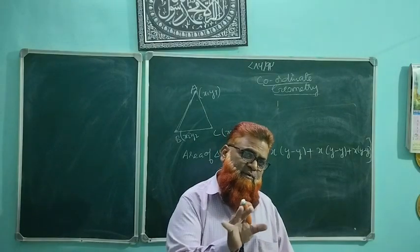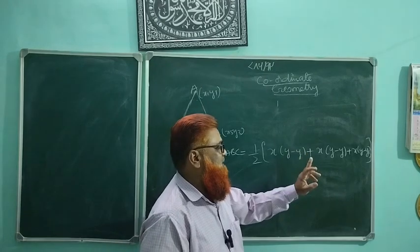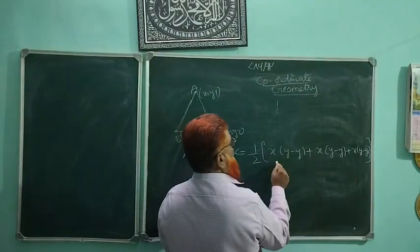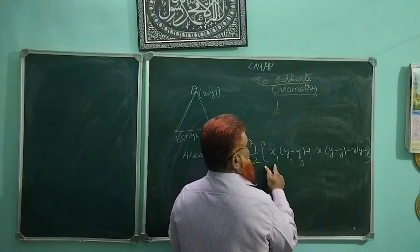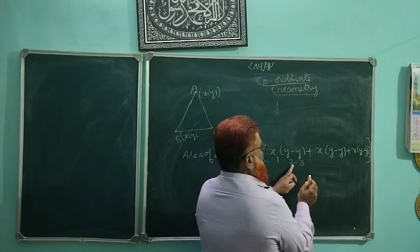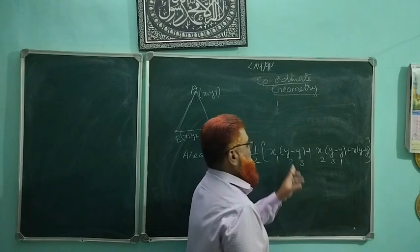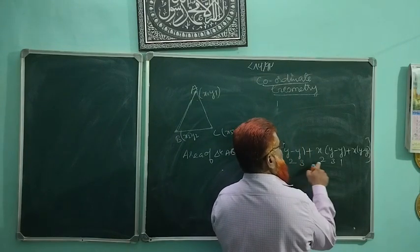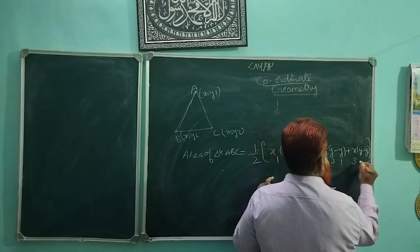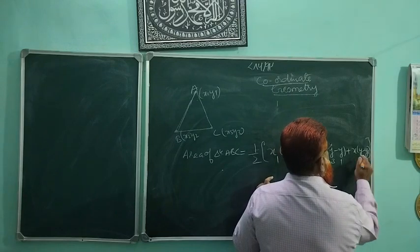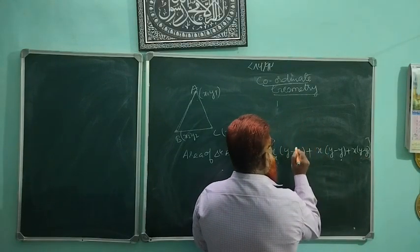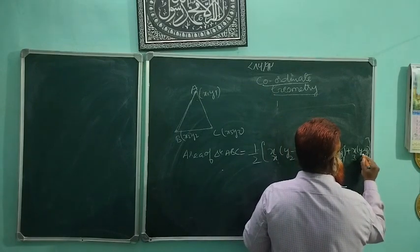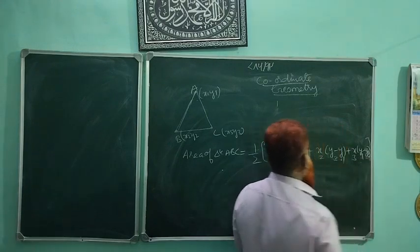I am showing you a trick to write this formula easily. Write: x times (y minus y) plus x times (y minus y) plus x times (y minus y), then arrange in cyclic order. The first group is subscripts 1, 2, 3: x1 into (y2 minus y3). Then starting with 2: x2 into (y3 minus y1). Then x3 into (y1 minus y2). So the formula is: half times [x1(y2 minus y3) plus x2(y3 minus y1) plus x3(y1 minus y2)].